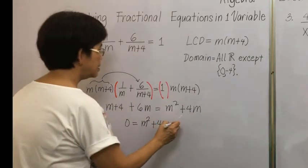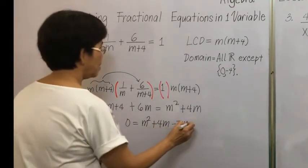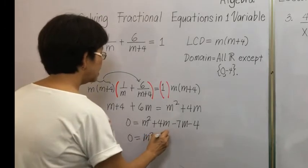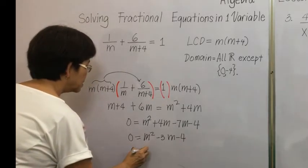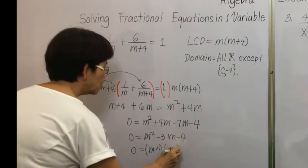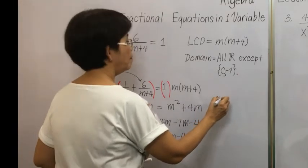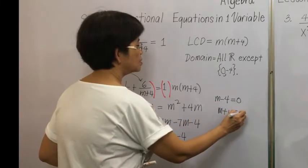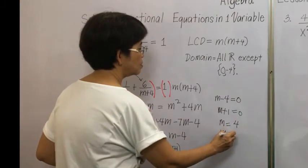Setting the equation to zero: 0 equals m squared plus 4m minus 6m minus 7, which simplifies. Subtracting 7m and subtracting 4 from both sides gives 0 equals m squared minus 3m minus 4. Factoring, we have 0 equals m minus 4 times m plus 1. Solving, m minus 4 equals 0 gives m equals 4, and m plus 1 equals 0 gives m equals negative 1.